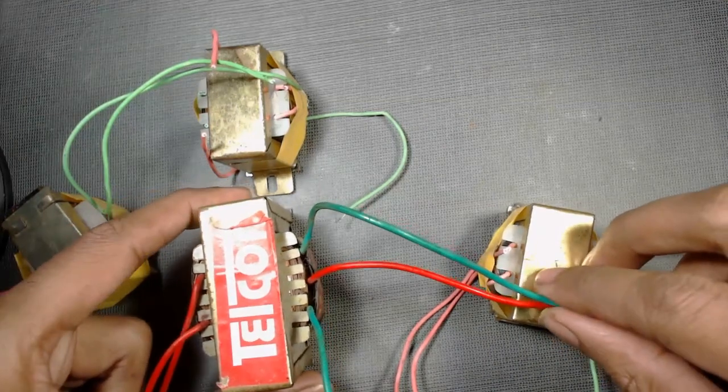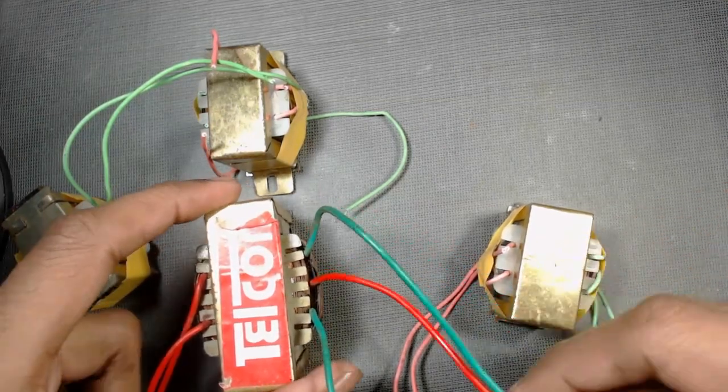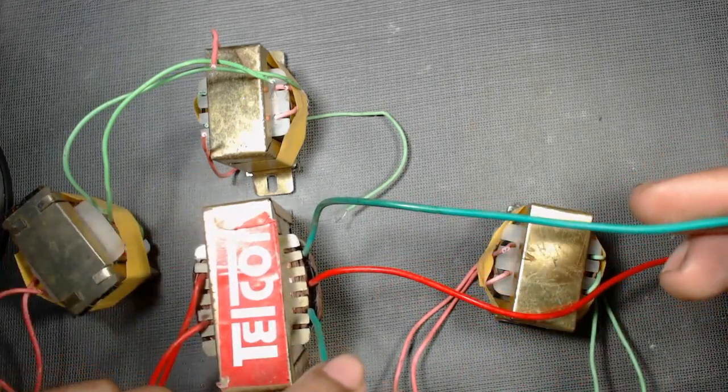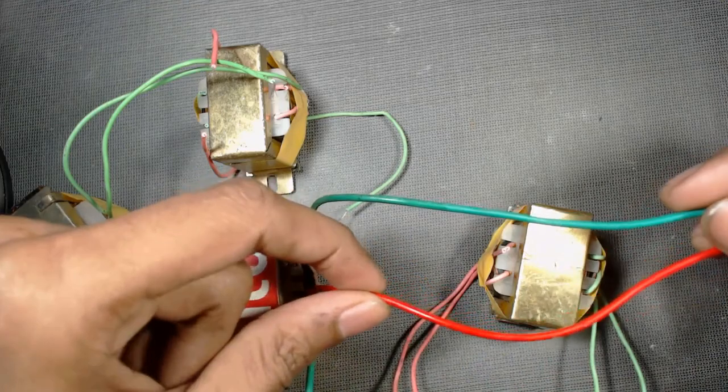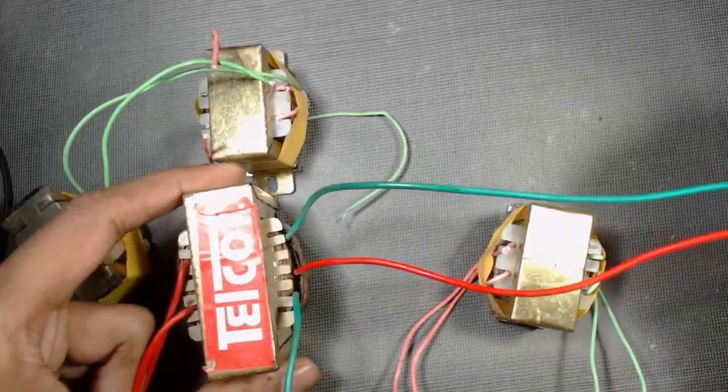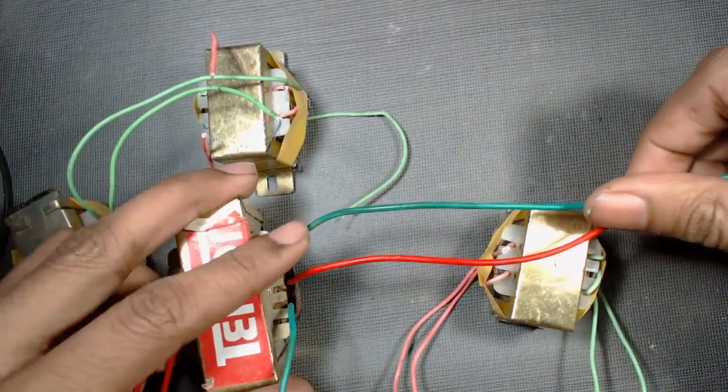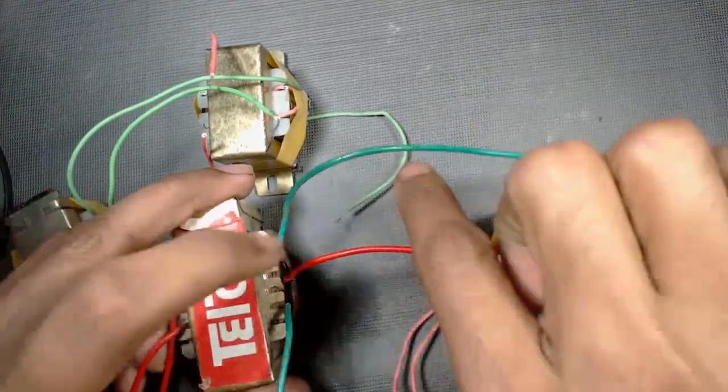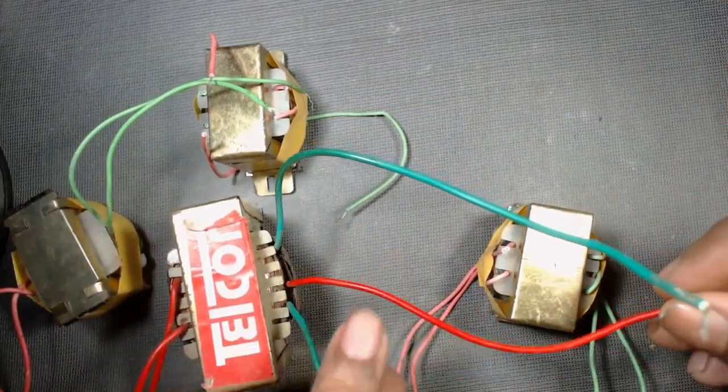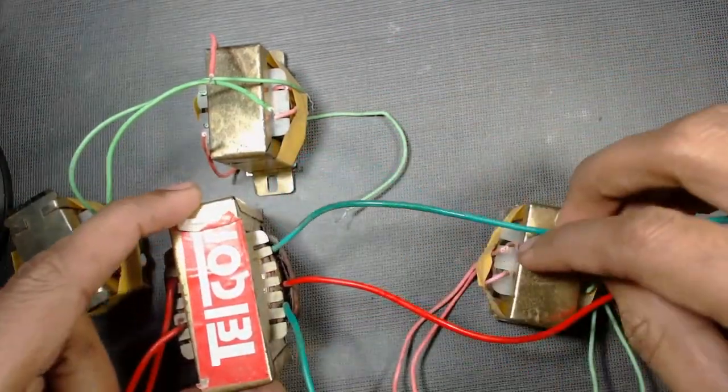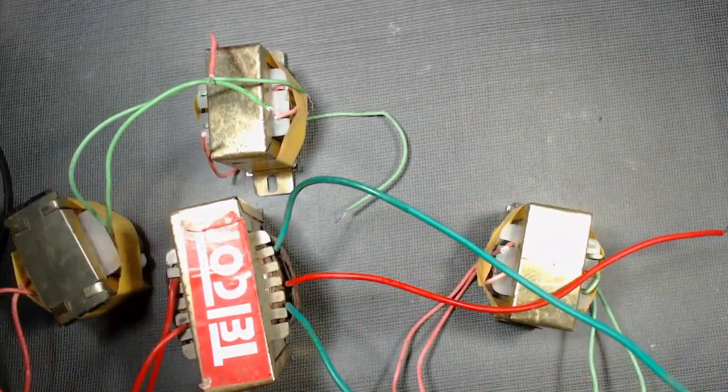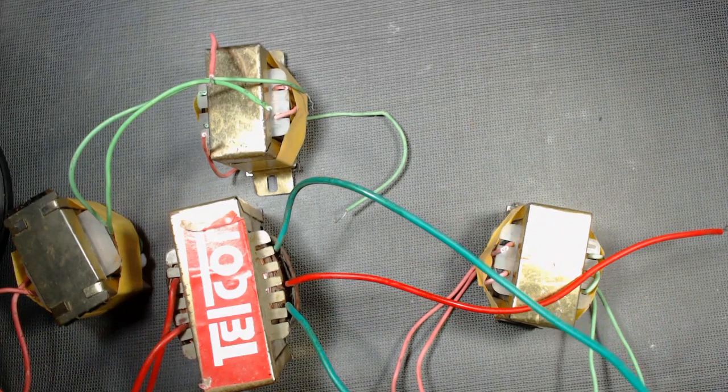Now we can connect our circuit to any one of these end terminals and to center terminal. Then we will get a 12 volt AC. That means if we connect our circuit to these two terminals or to these terminals, then we will get 12 volt AC at its output. And we can convert it to DC by using rectifier circuit.